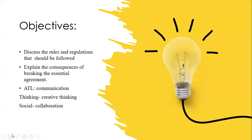In the second lesson, we will establish essential rules and regulations that we must abide by to ensure that the classroom enables you to acquire knowledge sufficiently and effectively. In other words, we are establishing a healthy environment for yourself and your peers to learn from. The objectives will include discussing the rules and regulations that should be followed, and explaining the consequences of breaking the essential agreement.